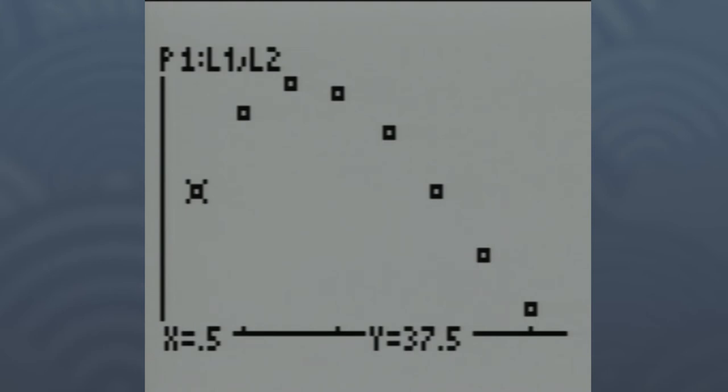This is a graph of all those points we just determined. What a lot of people find interesting when they do a project like this is they think they're just going to keep getting a bigger and bigger volume. But when you look at the points, what really happens is there is a maximum volume. If you hit TRACE on your calculator, you'll be able to jump from point to point. Right now the blinking cursor — we actually call it a spider — is sitting on the box that was half an inch high and had the volume of 37.5.